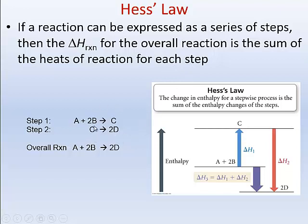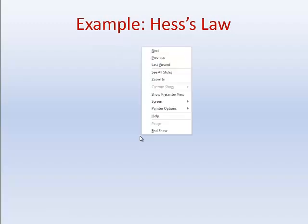We have chemicals A and B reacting. The overall reaction is: chemical A reacts with two moles of chemical B to make two moles of chemical D. We express that as the following steps: step one, A reacts with 2B to form chemical C; followed by step two, C decomposing into 2D. Overall, you started out with an A and two B's and you end with two D's.